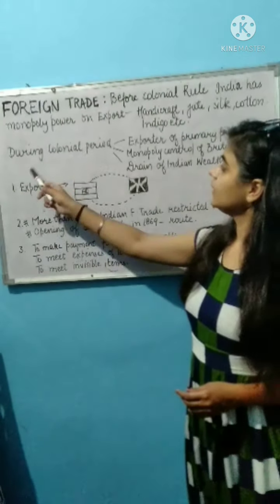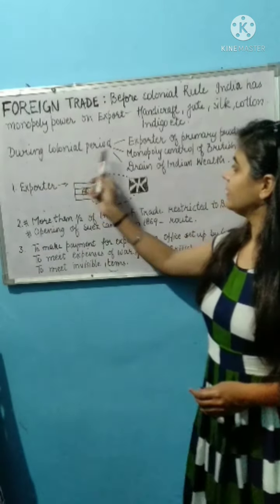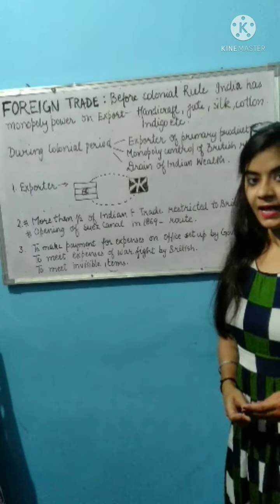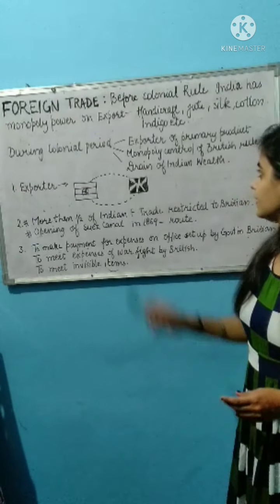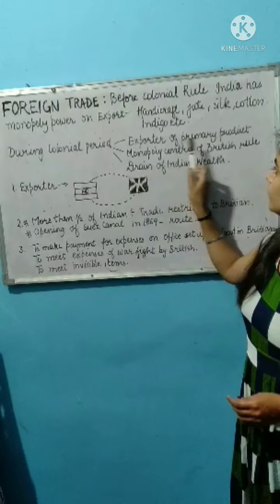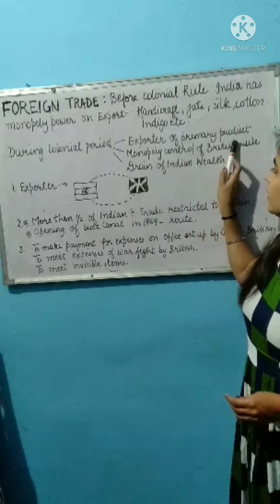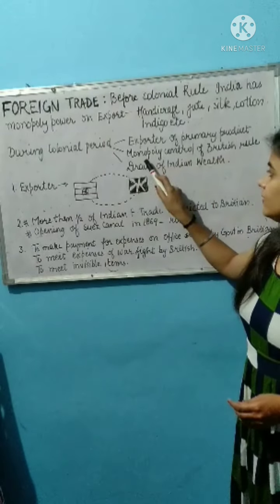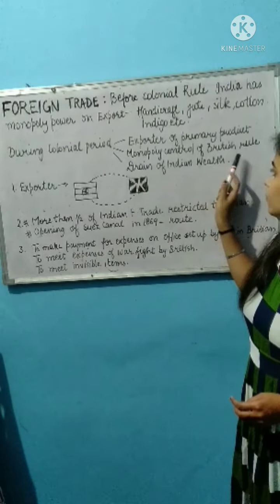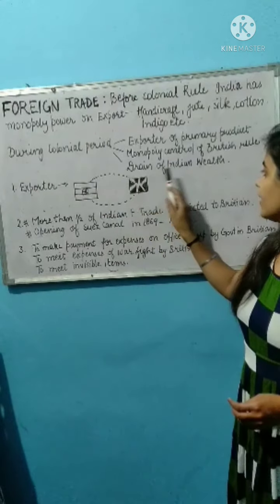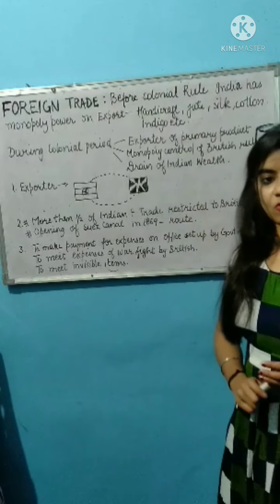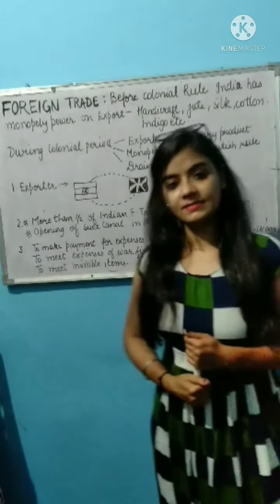So during the colonial period, we have three points here. What was the effect? First, exporter of the primary product. Second one is monopoly control of Britain. And third one is drain of Indian wealth. We will discuss this one by one.